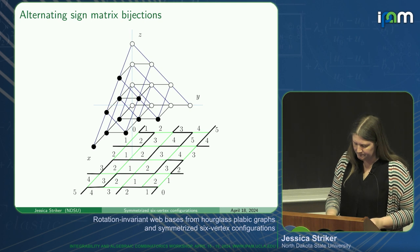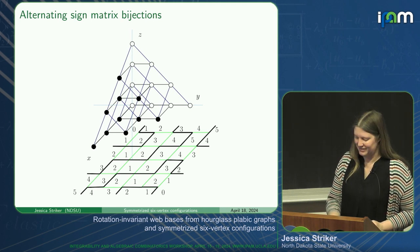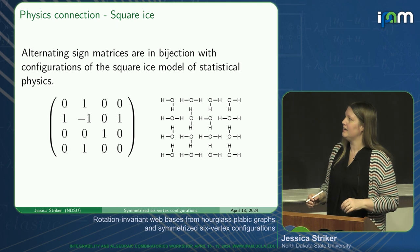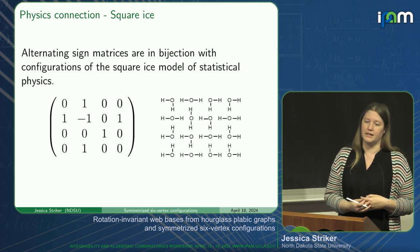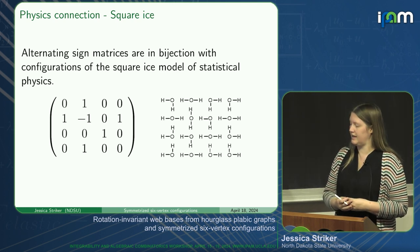Here's another picture that puts several of them on one slide: the height function, the fully packed loop, and the order ideal of the tetrahedral poset. The bijection I haven't mentioned yet is the bijection to the six-vertex model, which we saw in the talk of Anna.